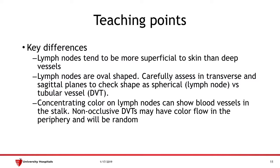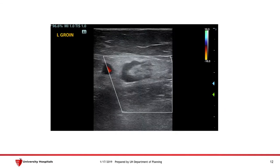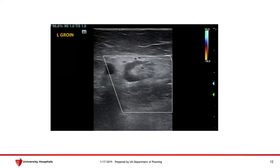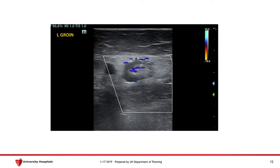The third point is that if you apply color flow on the lymph nodes, this can actually show blood vessels in the stalk. Non-occlusive DVTs, if you directly visualize them, may have color in the periphery but would not have color in the center of the DVT. Here's an ultrasound image that illustrates this point: when you apply color flow through the object, you can see color within the stalk itself, likely representing blood vessels within the lymph node stalk. This would not be seen if this were a DVT.